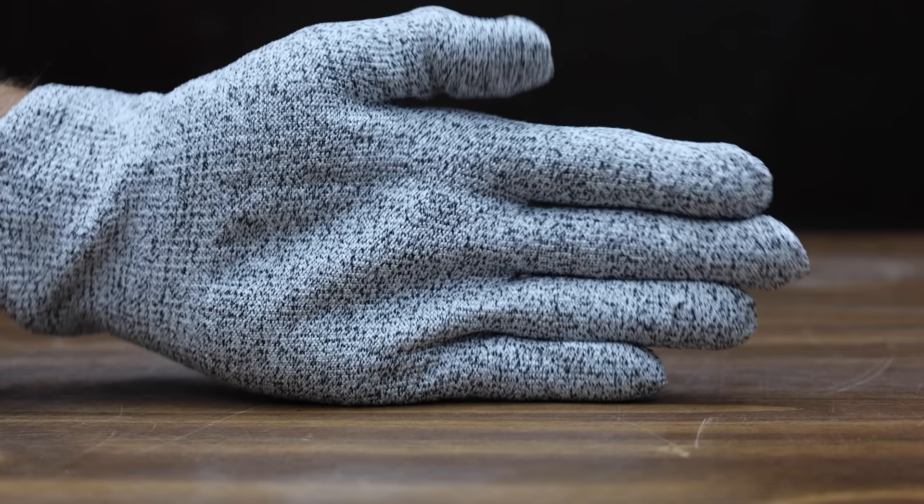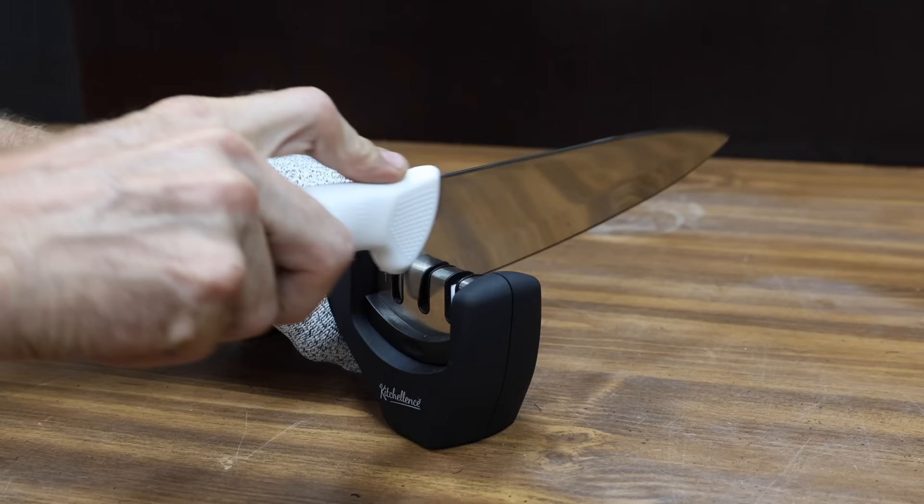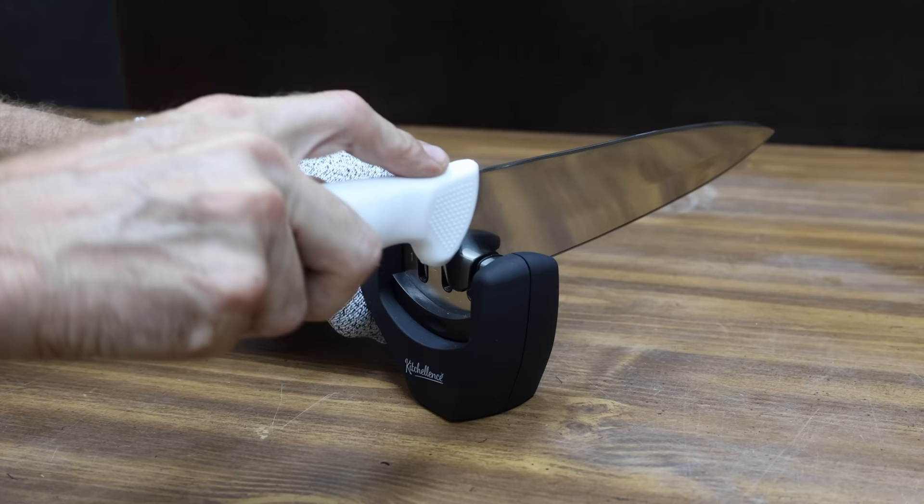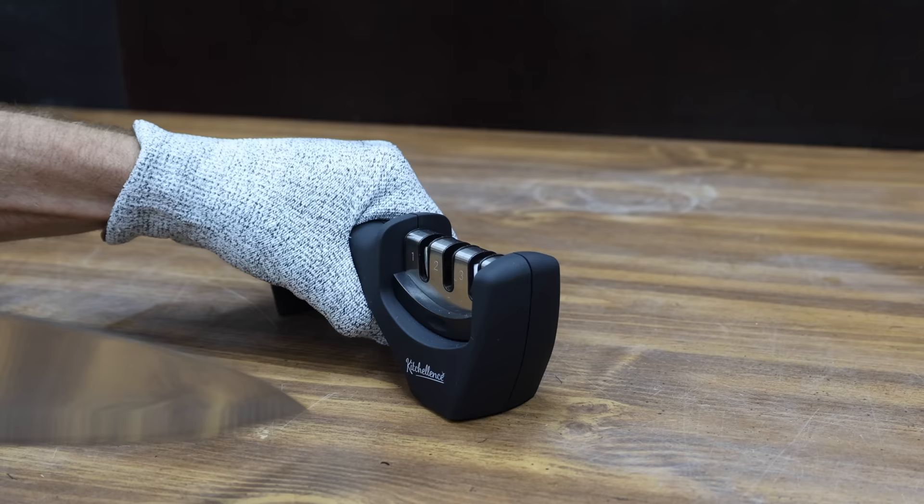To repair and straighten the damaged blade, pull the knife through slot one several times. To coarsely sharpen and restore the V-shape cutting edge, pull back several times. To finely sharpen, polish, and eliminate burrs on the blade, pull back several times. I went in and pulled the knife through each slot 20 times just to make sure that we did a thorough job.